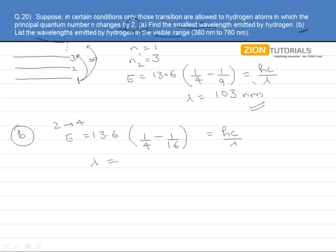We get lambda to be 487 nm, which lies in the visible range. Now if we calculate the wavelength of 3 to 5 transition, you will observe that that comes to be greater than 780. So only this wavelength comes out to be in the visible range.